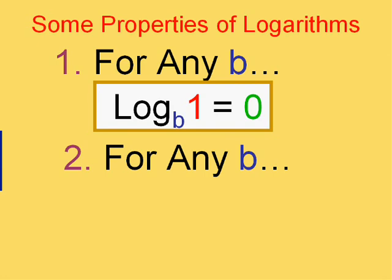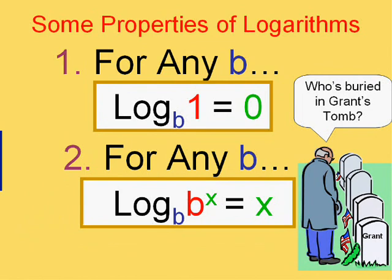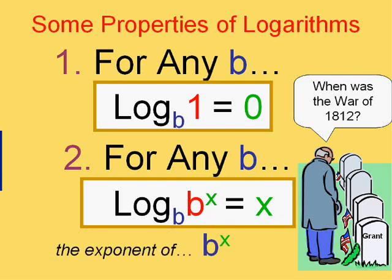The second property is that for any base b, the log using base b of b to the x is x. Now sometimes that's so easy it's hard. That's like saying who's buried in Grant's tomb or what is Elvis's first name or when was the war of 1812. It's like saying what is the exponent of b to the x using a base of b. Well of course it's x.